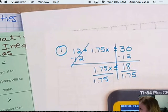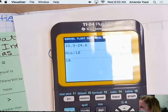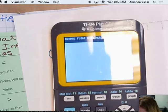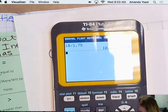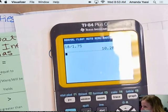So then we divide by $1.75. So $18 divided by $1.75. $10.29.